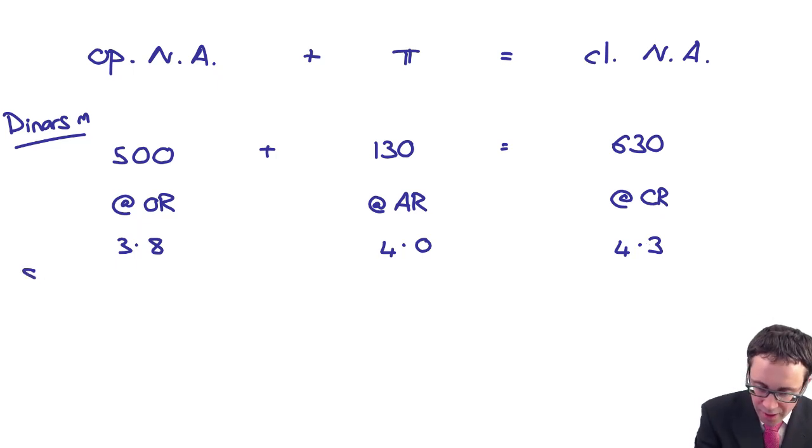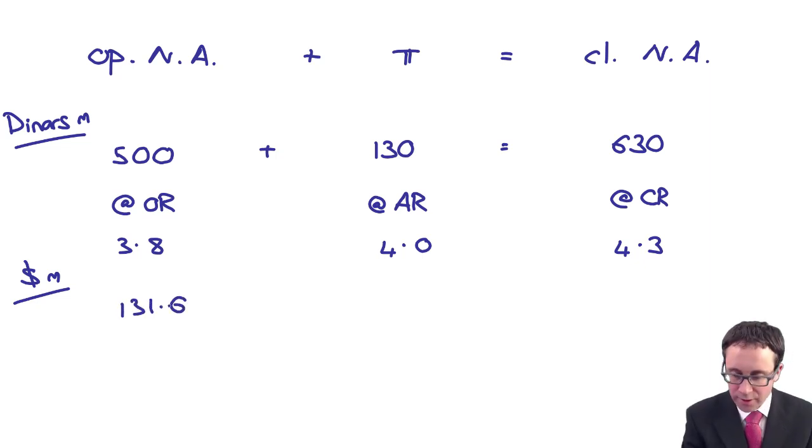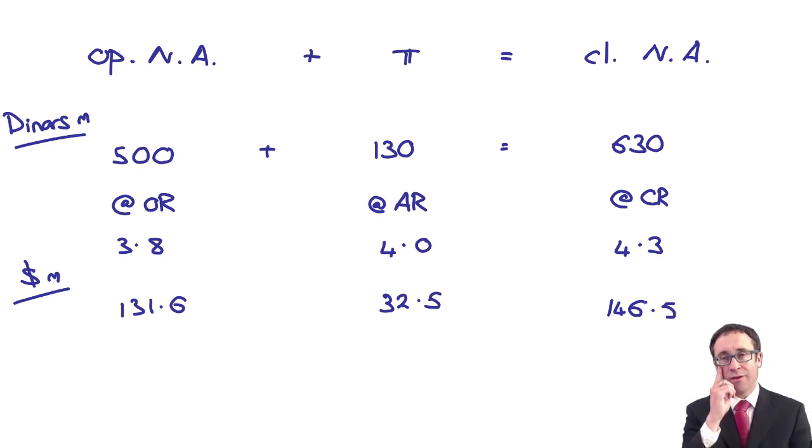So if we put that now into millions of dollars, is that 131.6, 32.5, and 146.5. And because we've translated all the assets and liabilities and the profits at different rates, that's not equal to the closing net assets, is it?